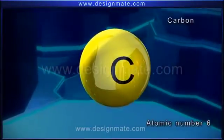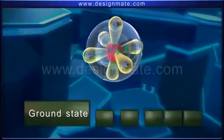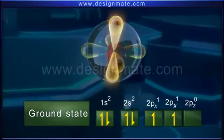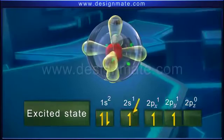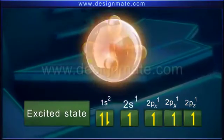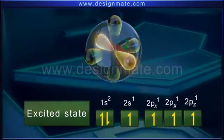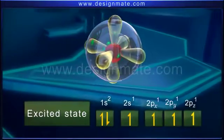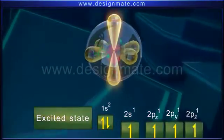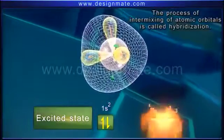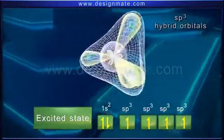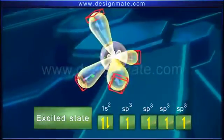A carbon atom has atomic number six. In its ground state, its electronic configuration is 1s², 2s², 2px¹, 2py¹, 2pz⁰. On excitation, an electron jumps from the 2s orbital to the 2pz orbital. To form four sigma bonds, the 2s, 2px, 2py, and 2pz orbitals intermix — a process called hybridization — forming four equivalent sp3 hybrid orbitals directed along the four corners of a regular tetrahedron.